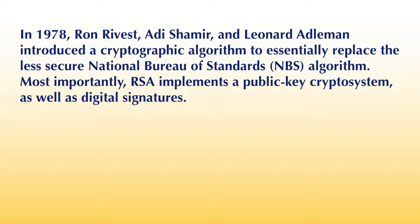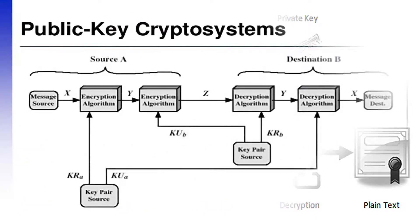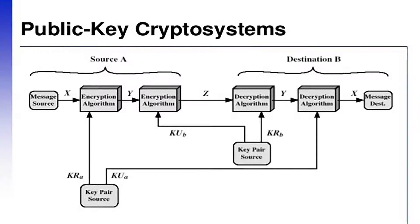What is RSA? In 1978, Ron Rivest, Adi Shamir and Leonard Adleman introduced the cryptographic algorithm to essentially replace the less secure National Bureau of Standards (NBS) algorithm. Most importantly, RSA implements a public key cryptosystem as well as digital signatures. Asymmetric encryption uses a pair of keys for encryption: a public key for encryption and a private key for decryption. Messages encoded using the public key can only be decoded by the private key. Some characteristics of asymmetric encryption: secret transmission of the key for decryption is done, and every entity can generate a key pair and release its public key.